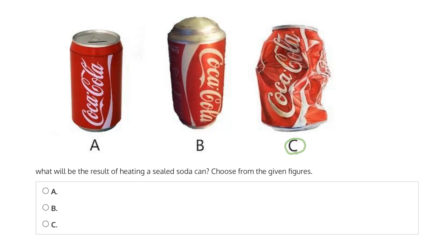And we have option C, where the can seems to have imploded and is actually at a smaller volume than something like A.